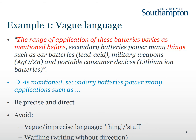In the first slide, one of the main problems is vague language. The section I've highlighted in red reads: 'the range of application of these batteries varies as mentioned before.' This is quite wordy and doesn't really clearly get to the point. This could be rephrased more clearly, as I have done below in blue, to say: 'as mentioned, secondary batteries power many applications such as...'